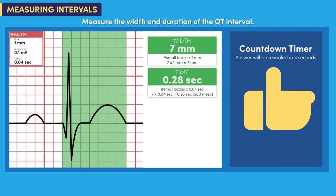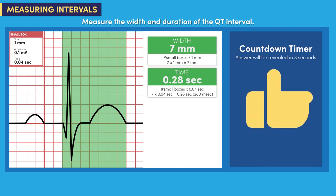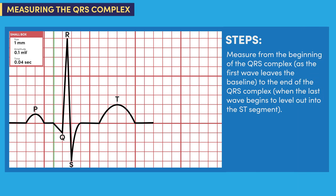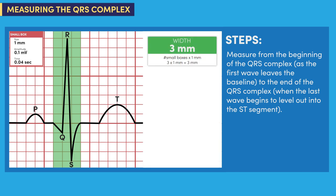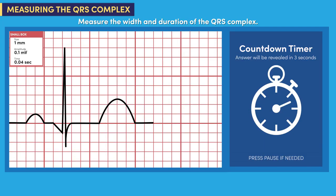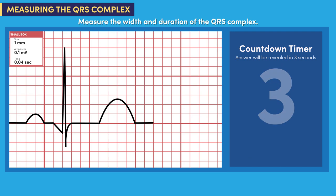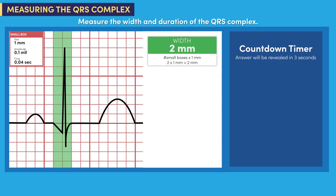I have a feeling that you answered correctly. Great job. Let's measure the QRS complex. Measure from the beginning of the QRS complex, as the first wave leaves the baseline, to the end of the QRS complex, when the last wave begins to level out into the ST segment. The end of the QRS complex is called the J point. The width of the QRS complex is three millimeters and the duration is 0.12 seconds or 120 milliseconds. Now you try. The width of the QRS complex is two millimeters and the duration is 0.08 seconds or 80 milliseconds.